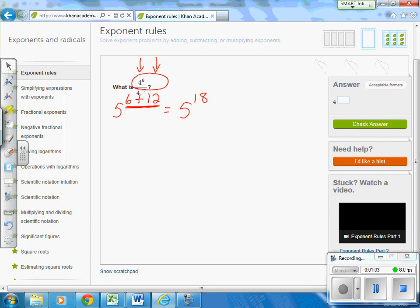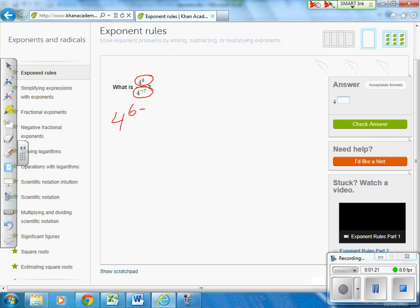Okay, now I have another scenario, and in this one, I am dividing. So this is the second scenario. When you are dividing, we have 4 to the 6th and 4 to the negative 7th. We're dividing. When you're dividing, you will subtract the exponents.